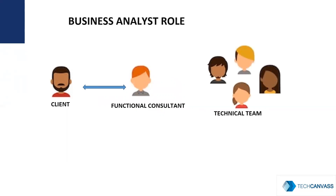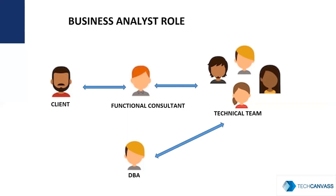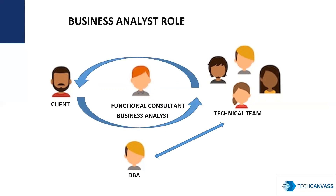The Technical Team interacts with the functional consultant and works on developing the code. The DBA, that is the Database Administrator, assists in database implementation and maintenance and helps the technical team. Ideally, a BA has to wear a Functional Consultant role. In an ERP project, the business analyst is the bridge between the client and the technical team.